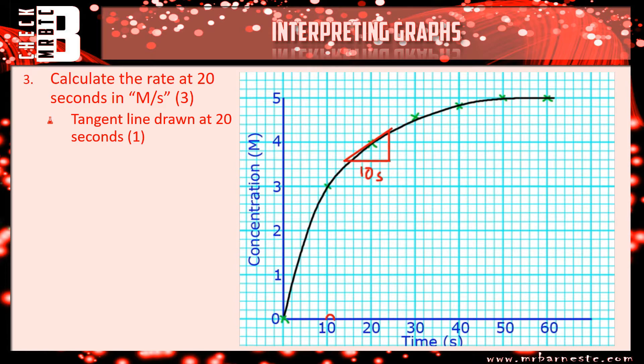Each square is worth two seconds. So, five times two is ten seconds. And then, going up my height, I've got one, two, three squares. Each square is worth 0.2. So, that is 0.6 molar.